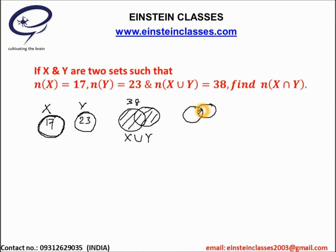We have to calculate the total number of elements in X intersection Y. The number of elements in X union Y equals 38. The total number of elements in X union Y will be equal to the total number of elements in set X plus the total number of elements in set Y. But what you can observe, this part has been counted twice, and hence from the sum it will be subtracted.